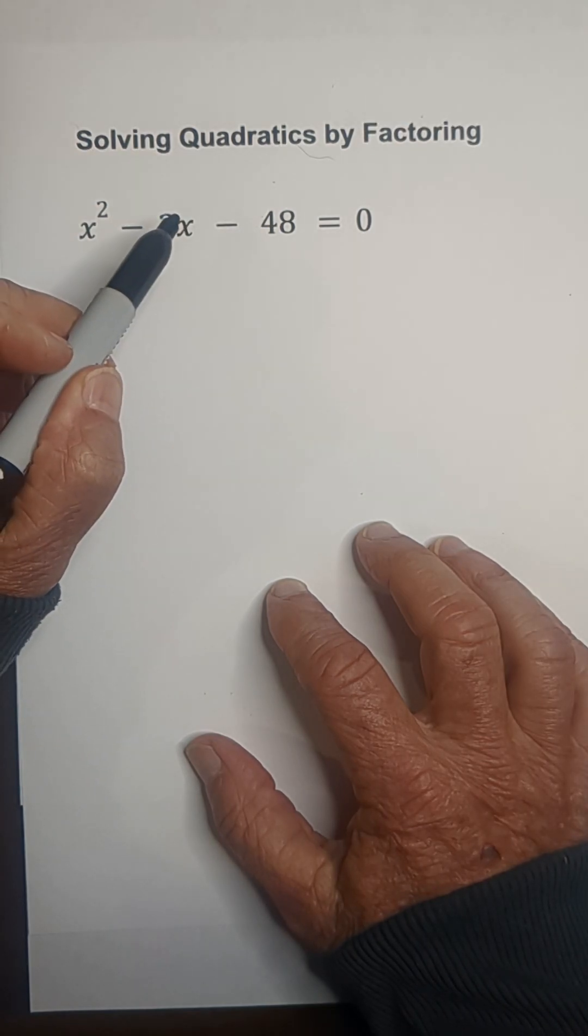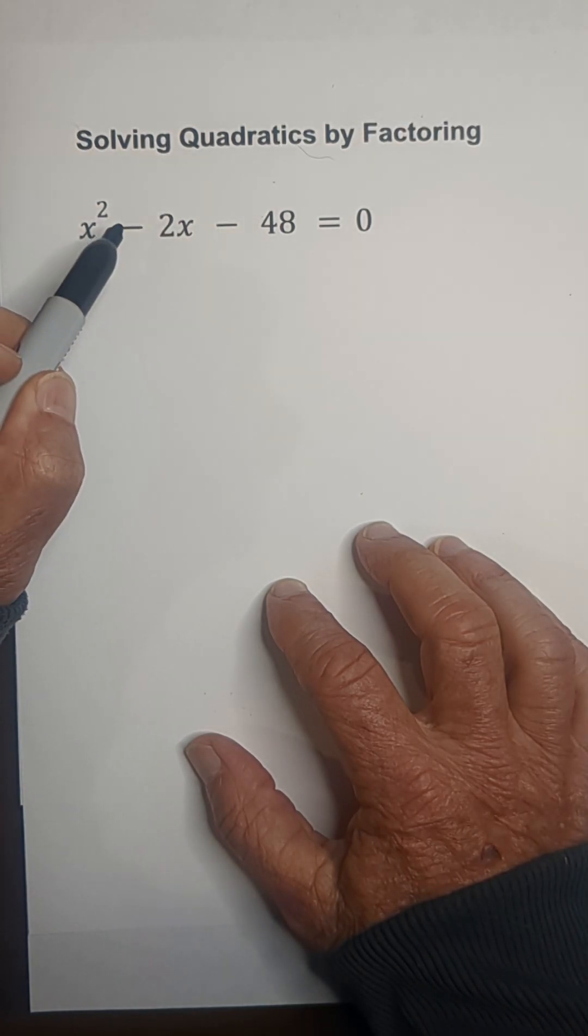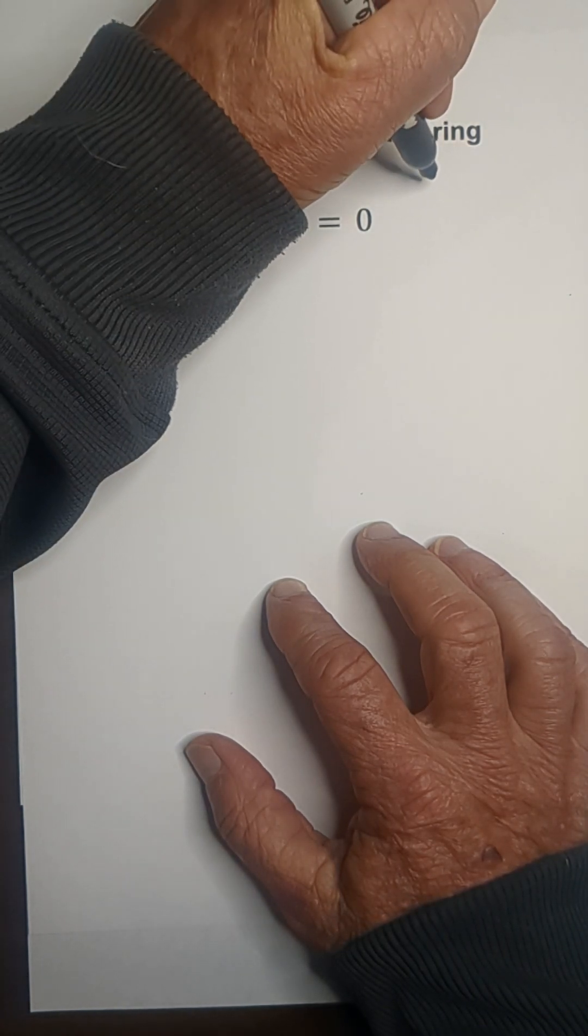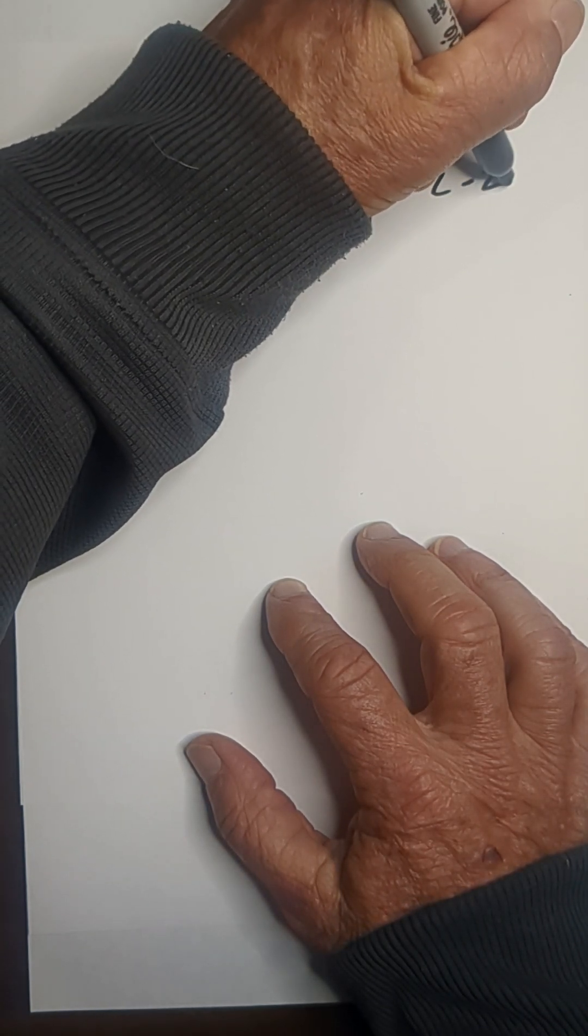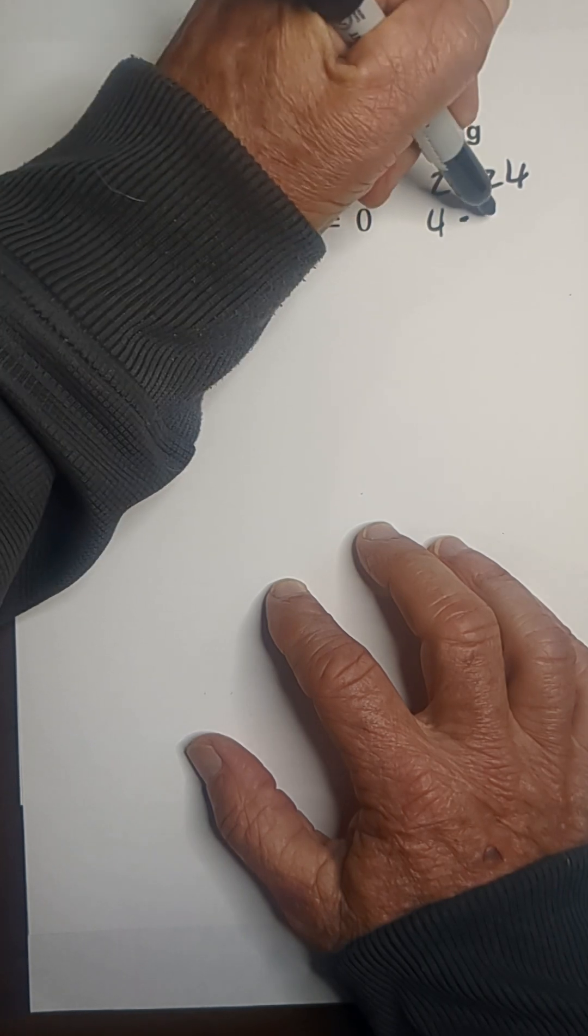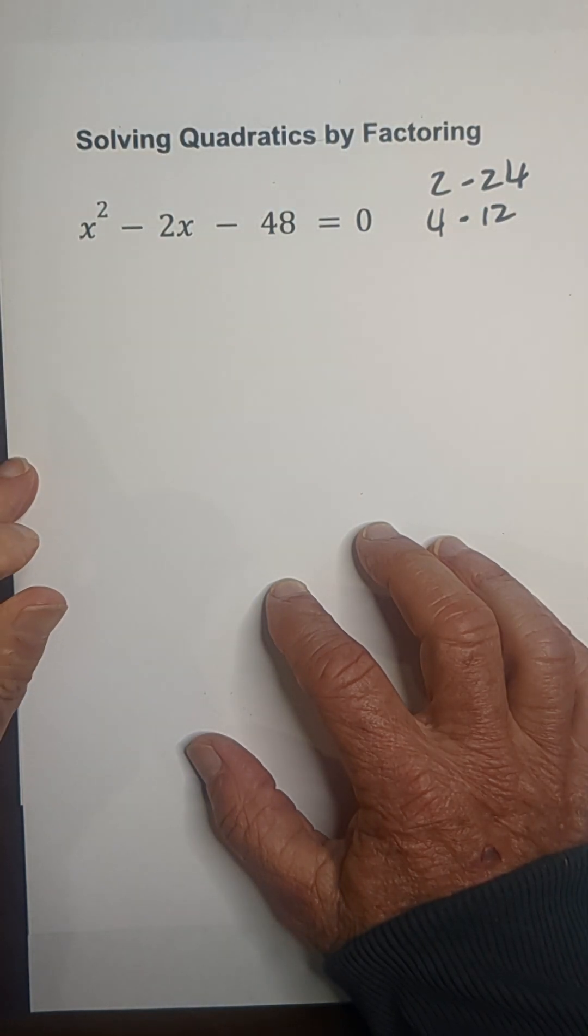When multiplied together equals negative 48 and when you add them equals negative 2. So let's factor negative 48. We have 2 times negative 24. Nope, that doesn't work. 4 times negative 12. No, that doesn't work.